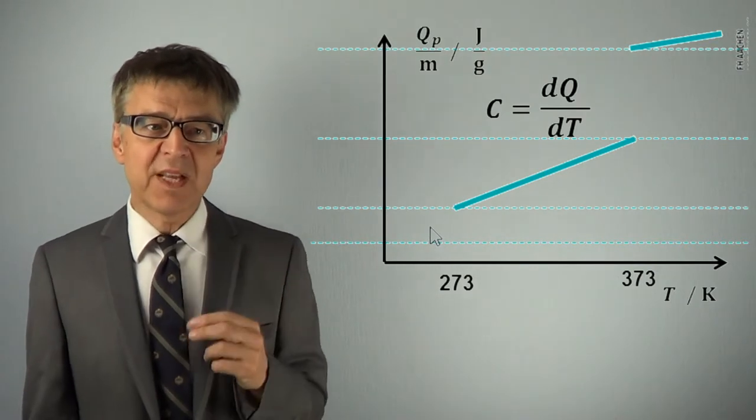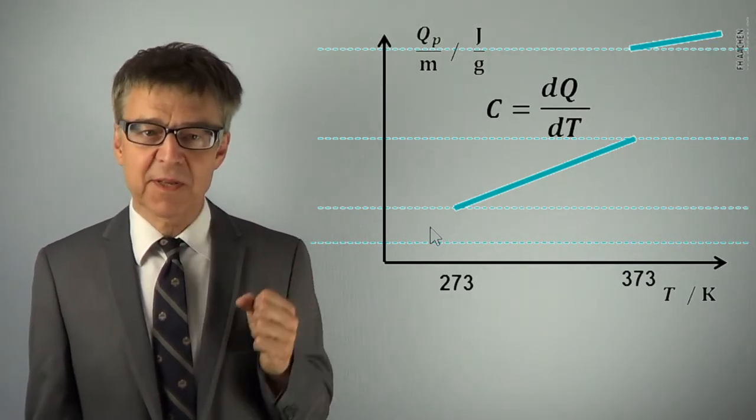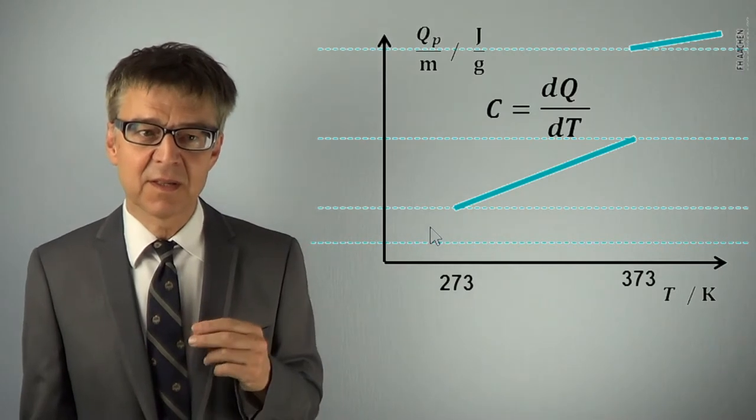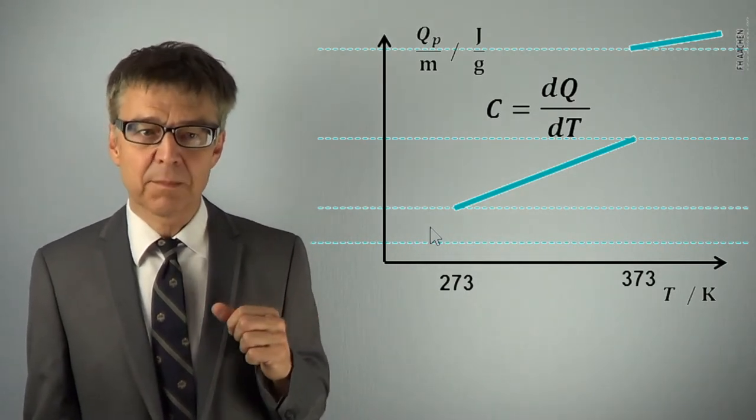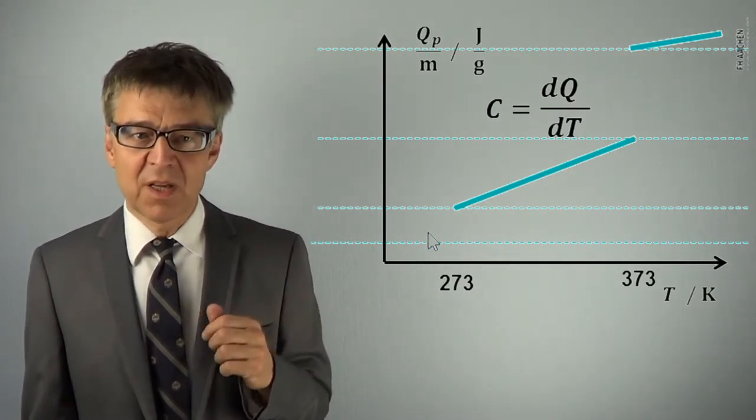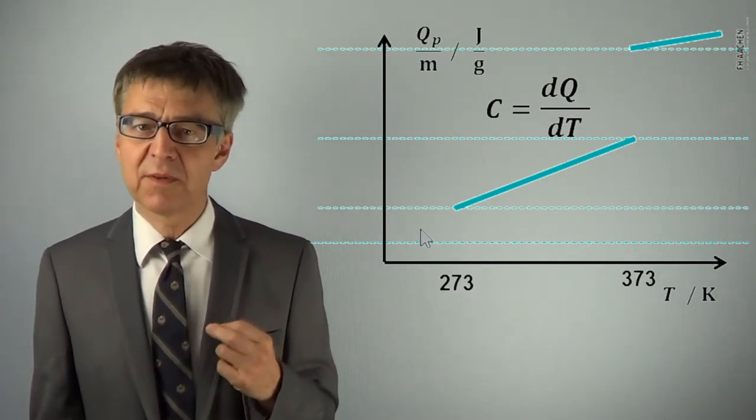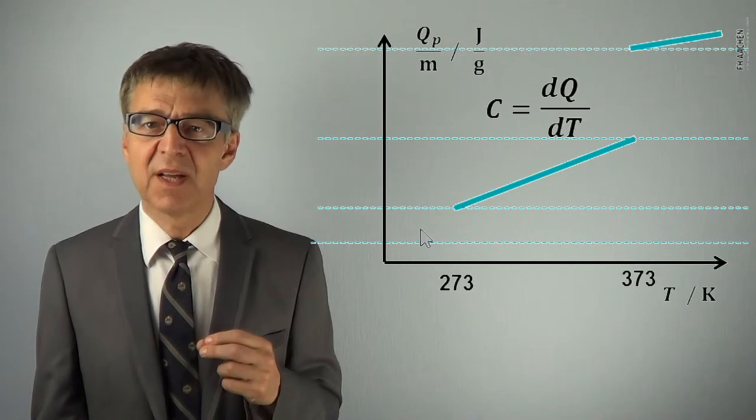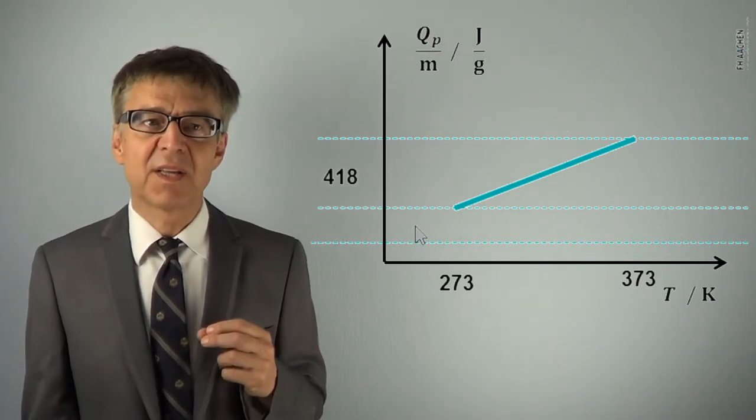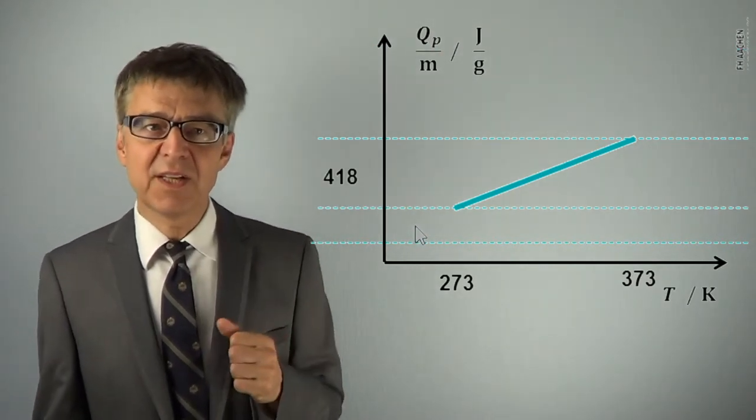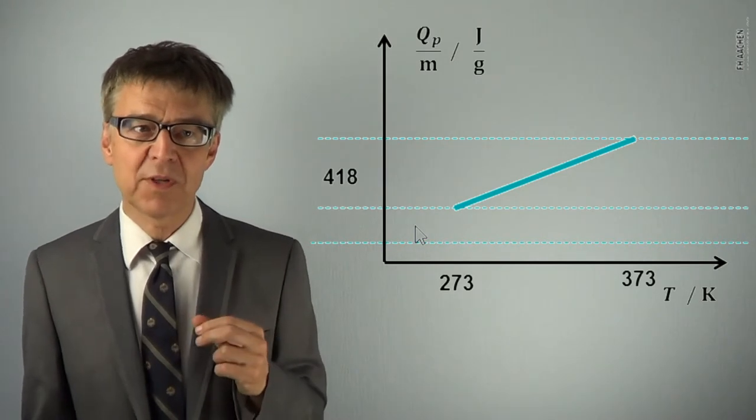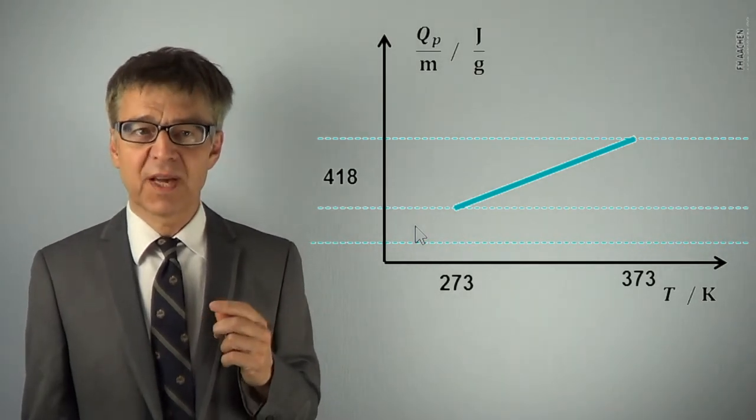If based on one gram of substance, we speak of the specific heat capacity. C is almost constant for water between 273 and 373K. It takes 418J for the temperature of water to rise by 100 in Kelvin.